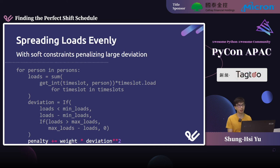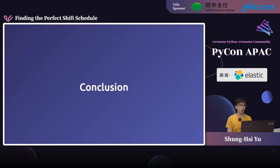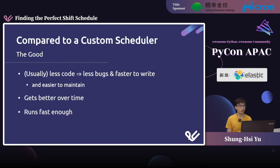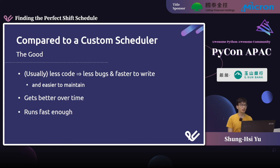With that I've concluded my advanced scheduling. Let's move on to the conclusion. First, I want to convince you to use an existing solver rather than a custom scheduler. The benefits: there's usually less code, which means fewer bugs and faster development, and it should be easier to maintain. Also, people are spending a lot of effort improving these solvers, so just updating your solver in a couple of years should get you better, faster results. Third, using a solver usually gets you results fast enough for scheduling persons.